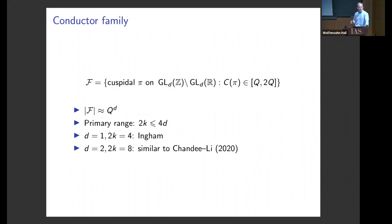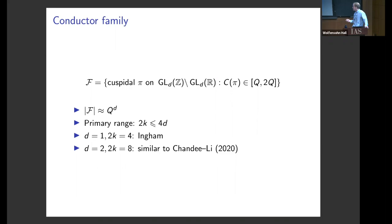I'll call this the conductor family. We look at cuspidal automorphic representations of GL(D) of level one, where the analytic conductor — this product of numbers appearing in the functional equation — is of size Q. The family size is roughly Q to the D, so the primary range becomes 2K up to about 4D. As D gets bigger and bigger, 4D gets bigger as well. In principle, for this heuristic, there are plenty of examples of families for which maybe there's no good reason we can't compute something like the 28th moment and see astronomical coefficients like the random matrix theory predictions.